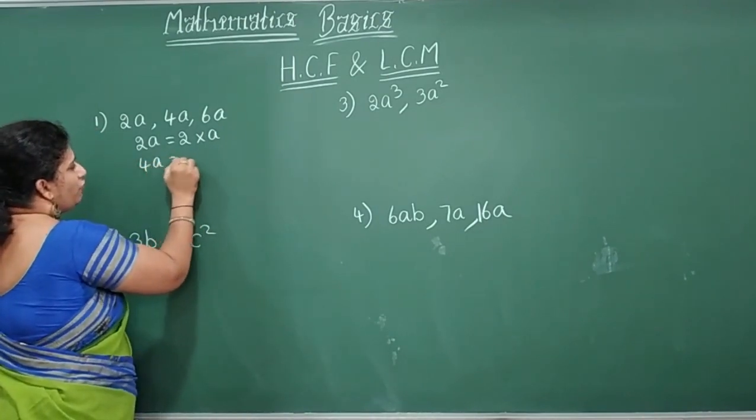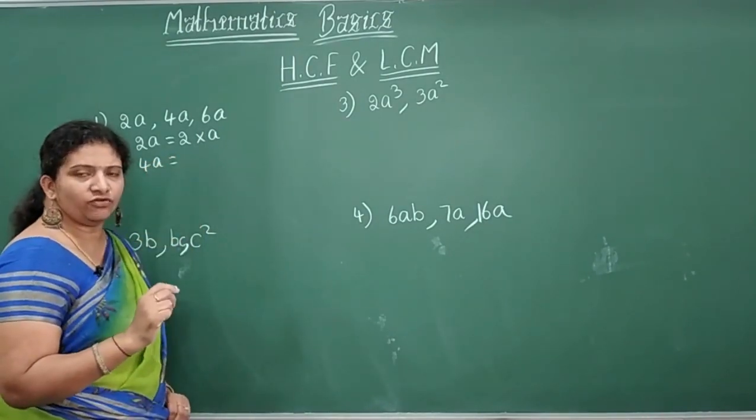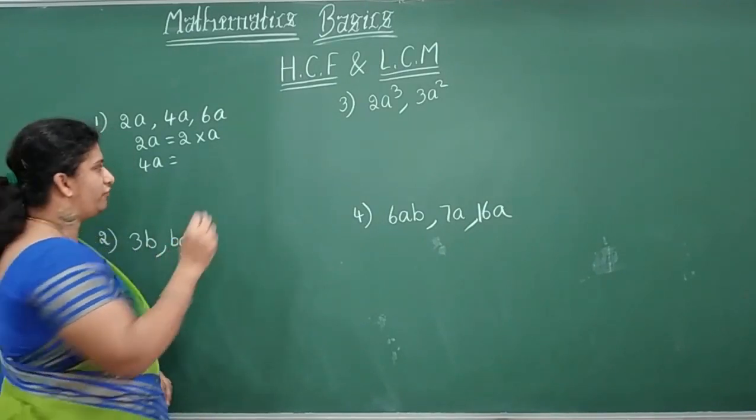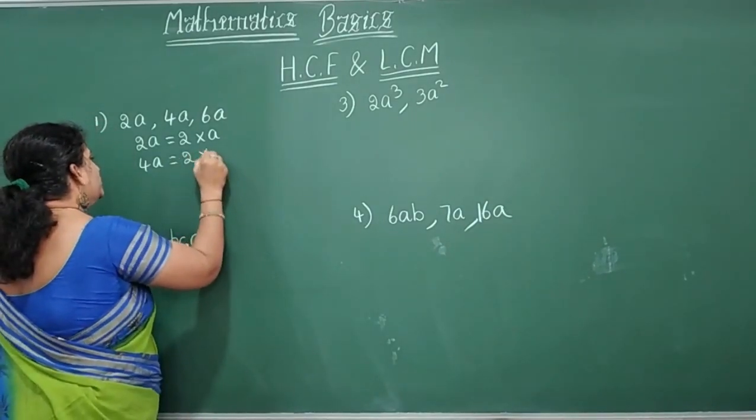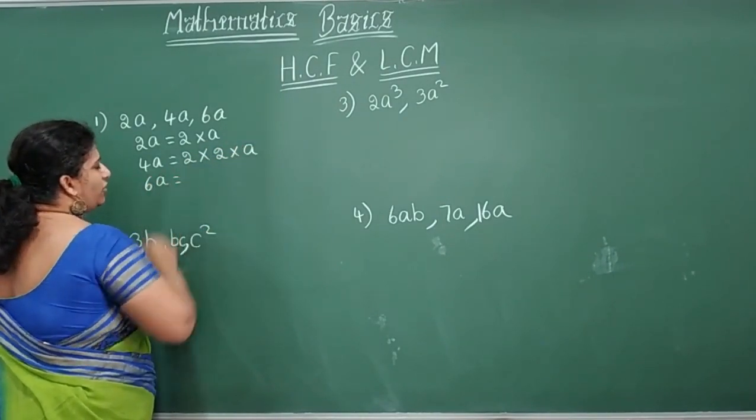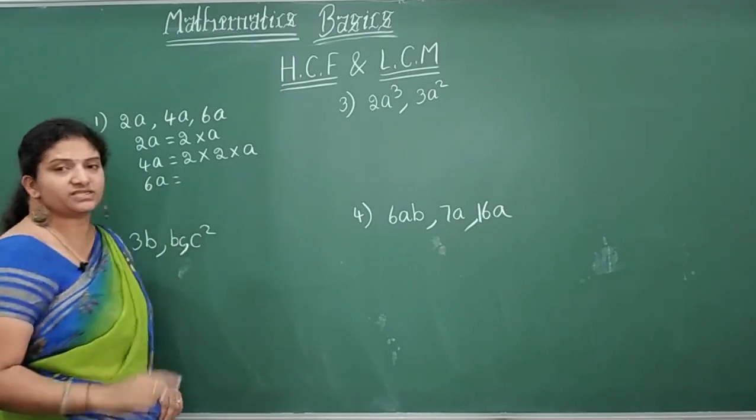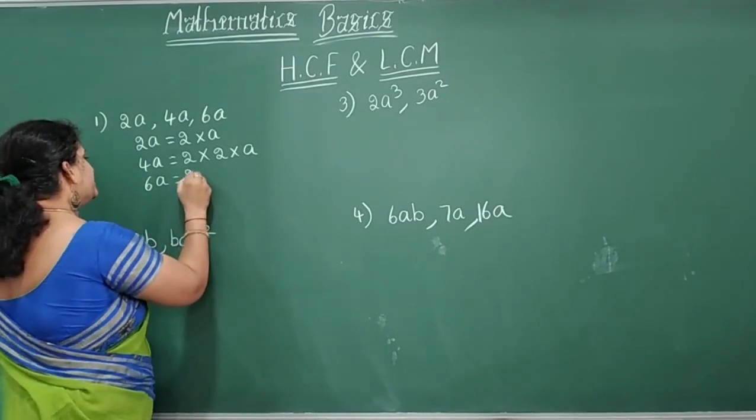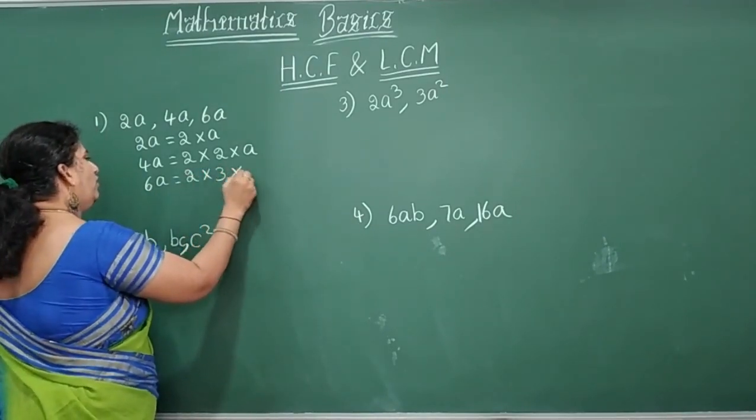4A, 4, split 4 children. 4 how can you write? 2 twos are 4. 2 into 2 into A. Then now 6A. How do you write? 6, split 6, 2, 3's are, into A.